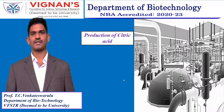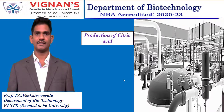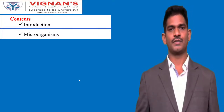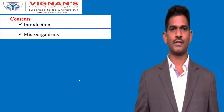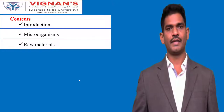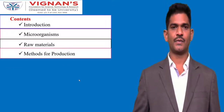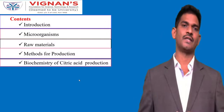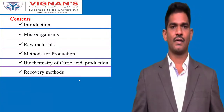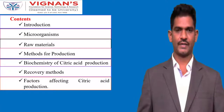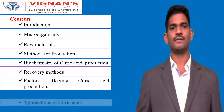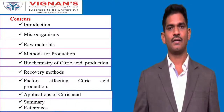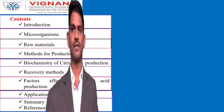Today's lecture topic is Production of Citric Acid. The contents include: introduction, microorganisms used for production of citric acid, raw materials, methods for production of citric acid, biochemistry of citric acid production, recovery methods, factors affecting citric acid production, applications of citric acid, and summary followed by references.